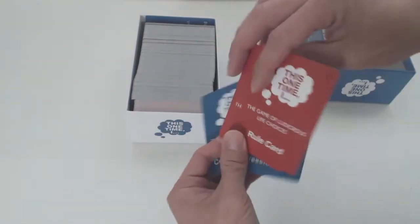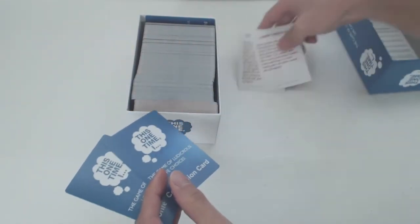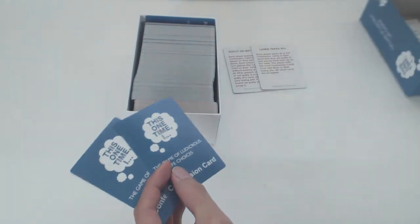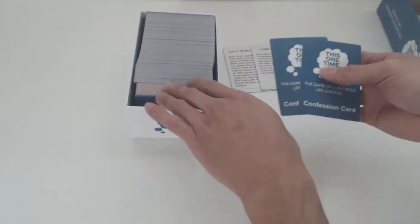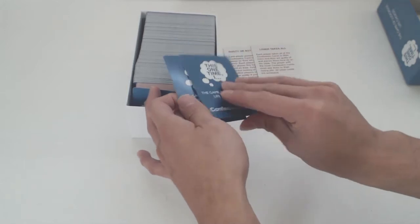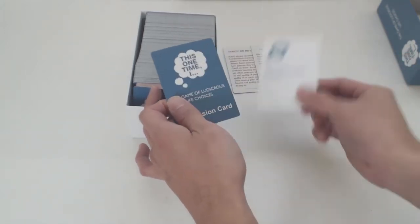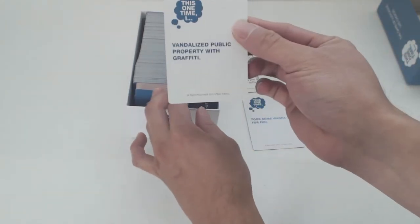The gameplay is played using the red rule cards, which tell you how each round is played. Some are group rounds and others target one or two players. There are 404 blue confession cards, which have fun and salacious reveals like took some viagra for fun, and vandalized public property with graffiti.